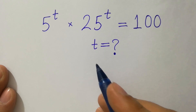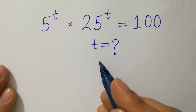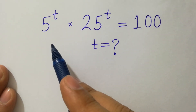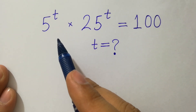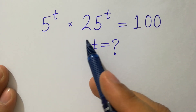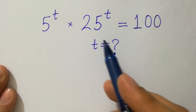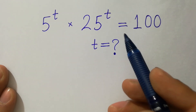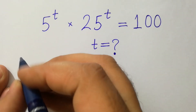Hello friends. Find the value of t if 5 to the power t times 25 to the power t equals 100. Let's have a solution.